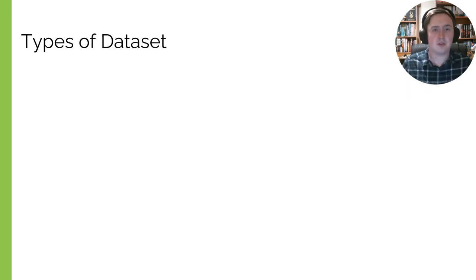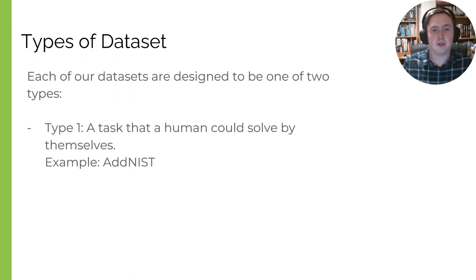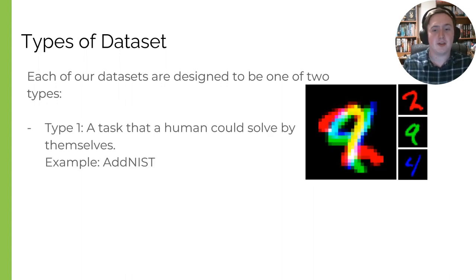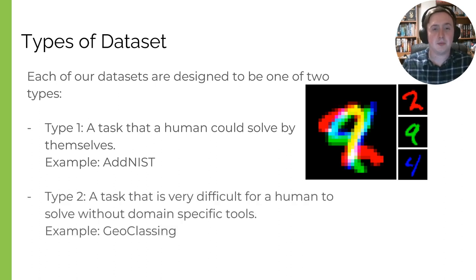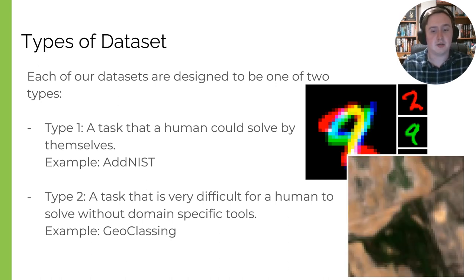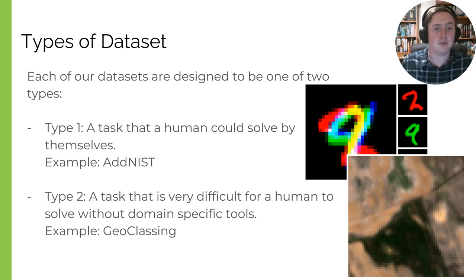We created these datasets with two types in mind. The first type is a task that a human could easily solve — an example is our ADNAS dataset, where you simply sum up the numbers in the channels and minus one. If a machine learning model can't solve this, then what's the point? We want machine learning to at least be able to do what a human can do. The second type is something that would be very hard for a human to do, like our Geoclassing dataset, where you need to identify which European country a photo is of — much harder if you're not familiar with that topology.